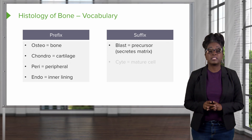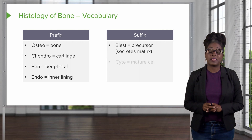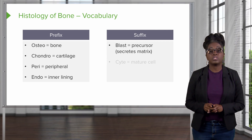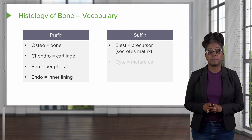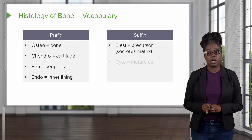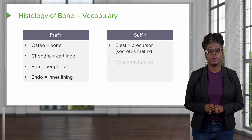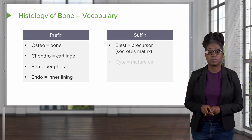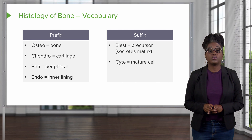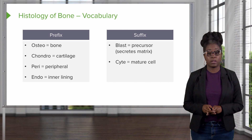For suffixes, at the end of the word, when you see blast — especially when talking about certain types of cells — these are normally precursor cells that are going to secrete matrix like collagen and ground substance. When you see cyte, think of those as mature cells.